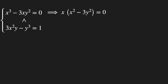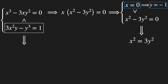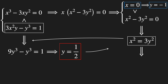Factoring out x in the first equation, we get that x equals 0 is a possible solution, which implies that y equals minus 1. The other possibility is that x squared minus 3y squared equals 0, or x squared equals 3y squared. Substituting into the second equation of our system, we get that 9y cubed minus y cubed equals 1, which implies y equals 1 half. Substituting back, we finally find that x equals plus or minus the square root of 3 over 2.